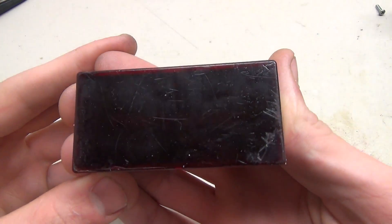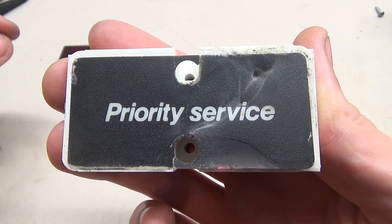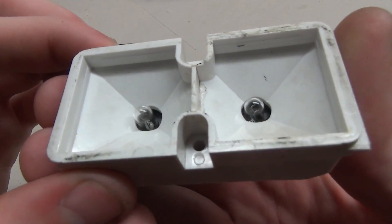We have the priority service light. The cover comes off revealing the little label that says priority service. The actual label is just a small thin piece of plastic.